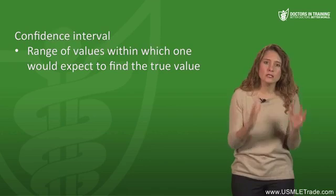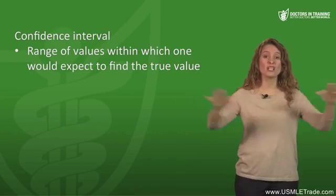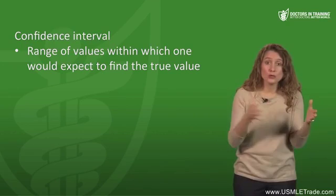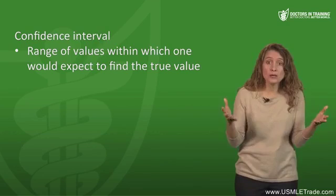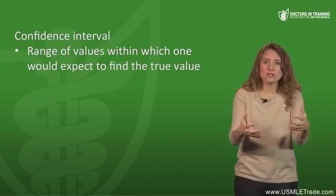The confidence interval can be calculated to reflect different levels of confidence. If you want to be 90% confident that the true value is contained within the confidence interval, that interval would be narrower. If you want to be more certain — say 99% — the range of numbers would be broader in order to include more of the possible values.